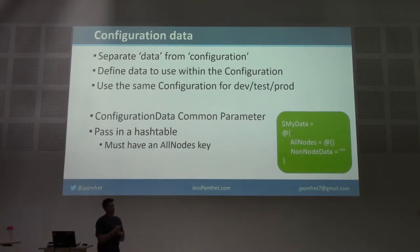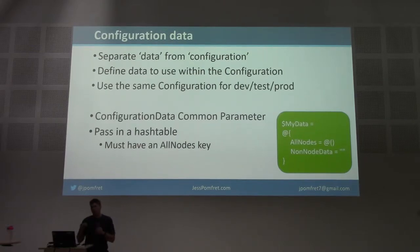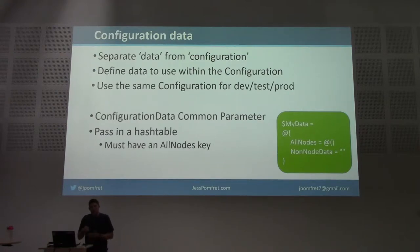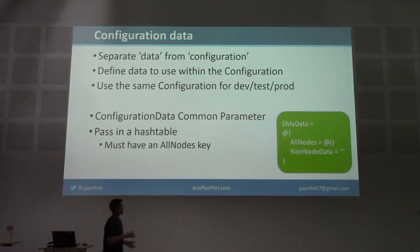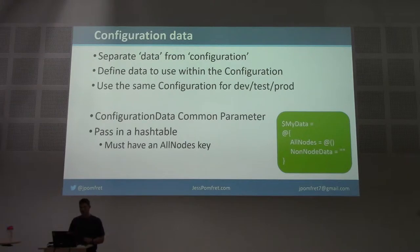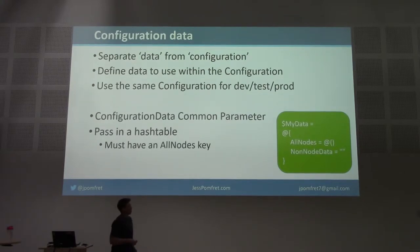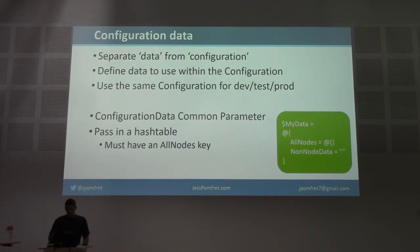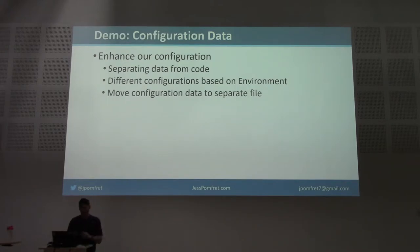In the real world we need to do more complicated things. The next step is configuration data — the idea is we separate the data, the hard-coded values, away from the configuration. We use that configuration data within the configuration document. This means we can use the same configuration for multiple environments but change it slightly to behave differently per environment. Configuration data is stored as a hash table. It must have an AllNodes key, but you can also have non-node data. The AllNodes key lists your nodes — either an asterisk for all of them, or one by one with data that only affects that certain server.